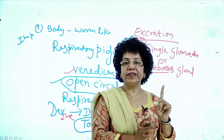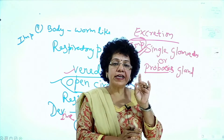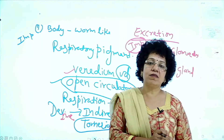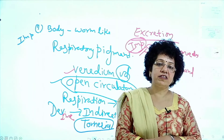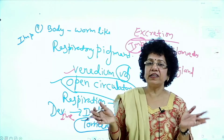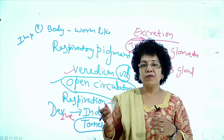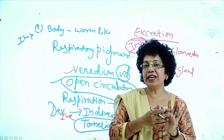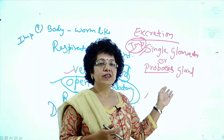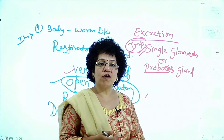Open circulatory system is present. Except Hemichordata and Urochordata, all chordates have a closed circulatory system. Hemichordata is the connecting link between chordate and non-chordate. Most of its characters are like non-chordates, so it is kept in the non-chordates.